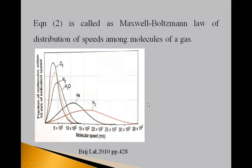Equation second is called Maxwell Boltzmann law of distribution of speed among molecules of gas. Friends, see here suppose there is a container containing gas. So, the molecules of the gas are continuously in motion. They perform zigzag motions and they collide with each other like this.